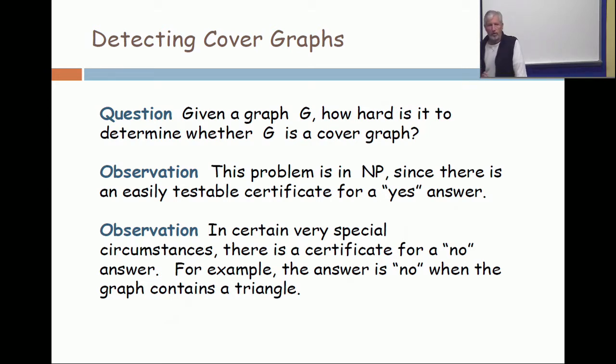Does a graph have a Hamiltonian cycle, yes or no? If you say yes, you don't have to explain how you found the Hamiltonian cycle, you just have to explain what are the vertices that you should visit in order to produce the cycle. And a referee can check whether that's correct. So if you say yes to the question that a given graph is a cover graph, your certificate is the data for a poset. And then a referee takes the data for the poset and determines its cover graph. That's easy.